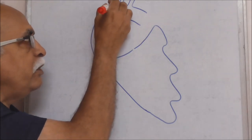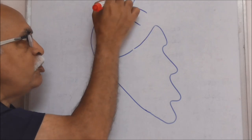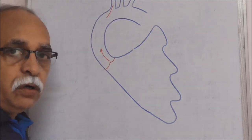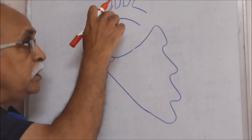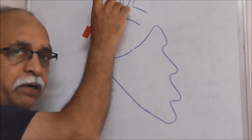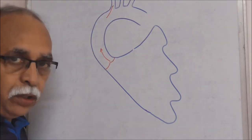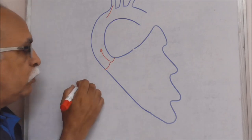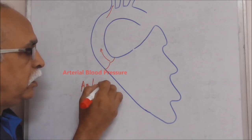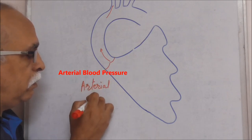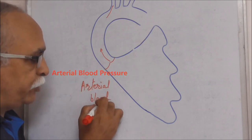The blood that is entering the artery exerts a pressure against the arterial walls. This pressure exerted by blood against the arterial walls is what we call arterial blood pressure.